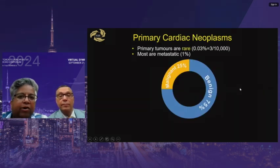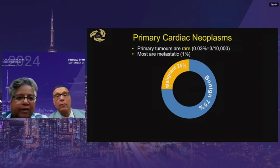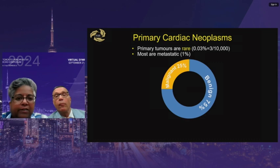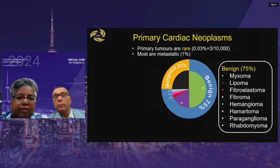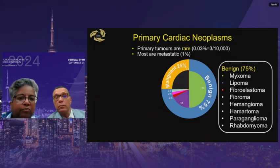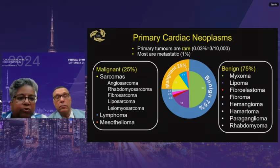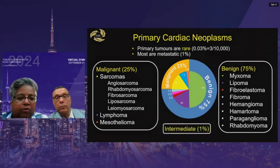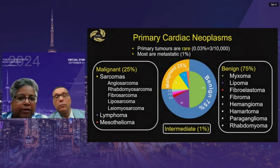Primary cardiac neoplasms are extremely rare — 0.03%. Most tumors we see are metastatic. Of primary cardiac tumors, 75% are benign and 25% are malignant. Benign tumors include myxoma, lipoma, and fibroelastoma. The majority of malignant tumors — 25% — are sarcomas, with lymphomas and mesotheliomas also present. The 2015 WHO classification added an intermediate class of tumors of different cell origins not necessarily falling under malignant or benign.